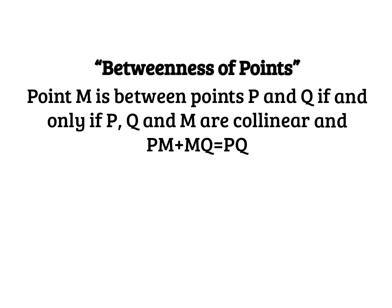Let's first talk about what this means, this betweenness of points. Here is the theorem and the definition that we spoke about in class. Point M is located between points P and Q if and only if P, Q and M are collinear and this formula makes sense or this formula is true. PM plus MQ equals PQ.